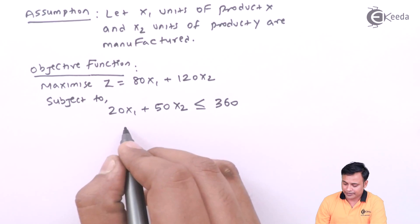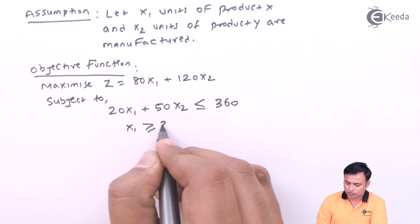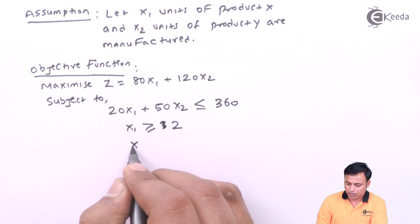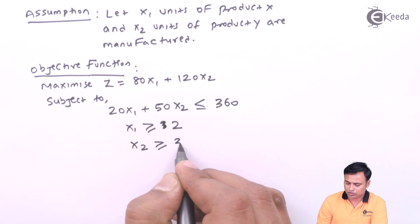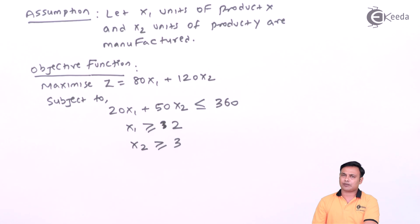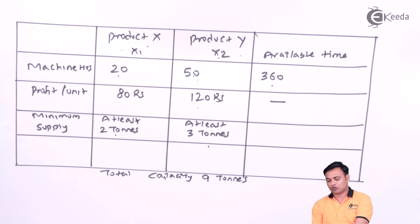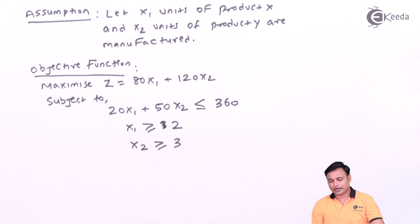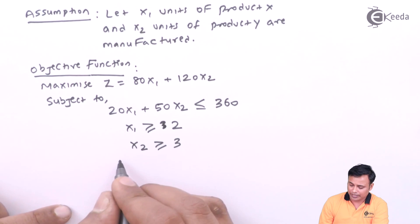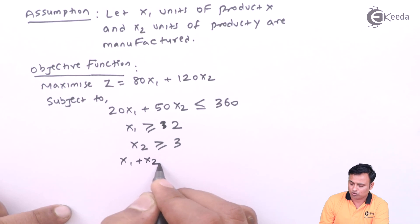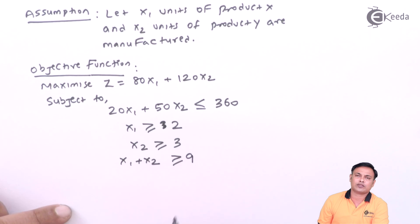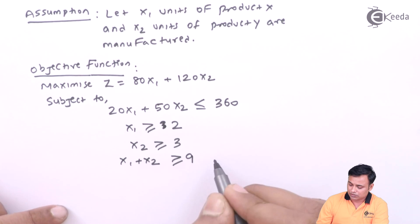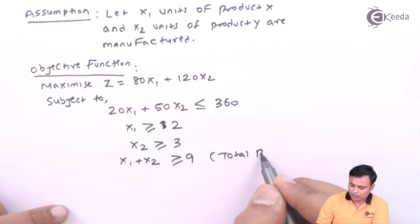Second we have minimum supply constraint. I should supply minimum 2 tons of X and 3 tons of Y. So x1 more than equals to 2, x2 more than equals to 3, that is my minimum supply constraint. And then we have the total capacity: x1 plus x2 cannot be more than 9 tons. This is the total production constraint.